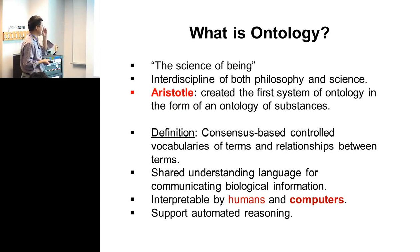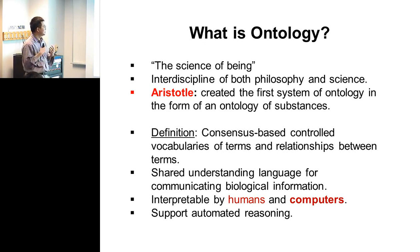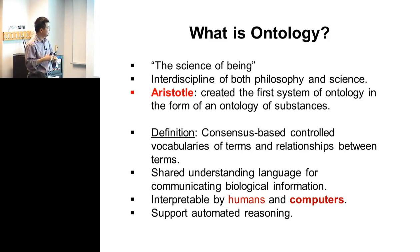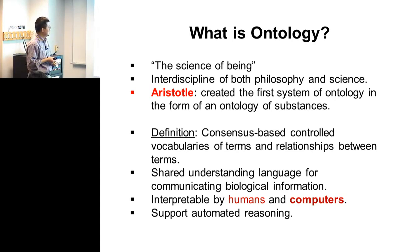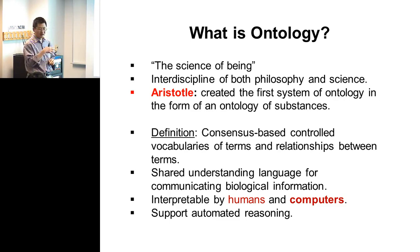What is ontology? 'Onto' really means being, so ontology is the science of being. It's an interdiscipline between philosophy and science. You can go back to Aristotle, who created the first system of ontology in the form of an ontology of substances — how can we classify those substances? It's kind of very old, but at the same time it's a very young science.